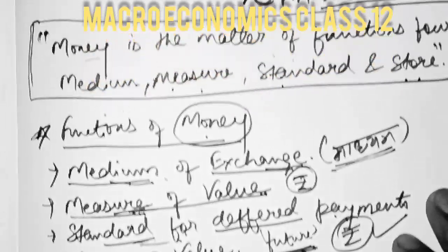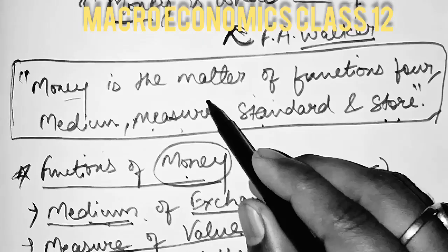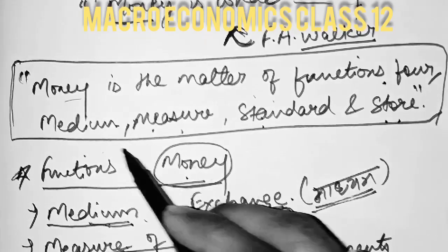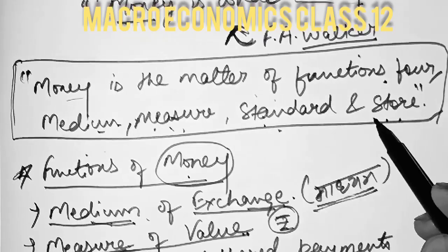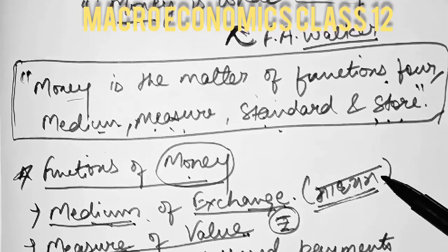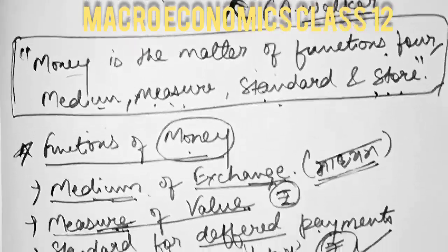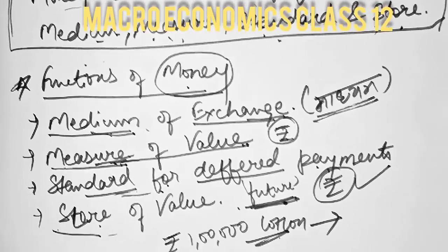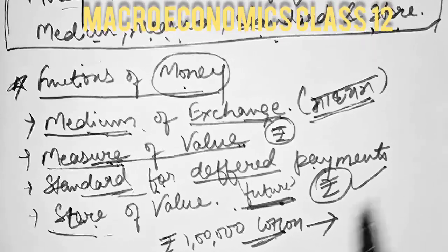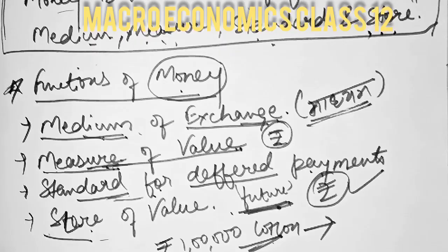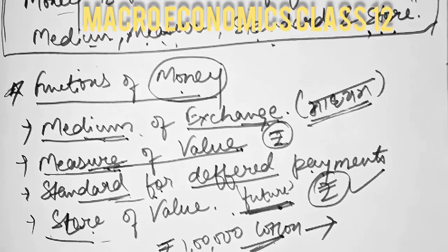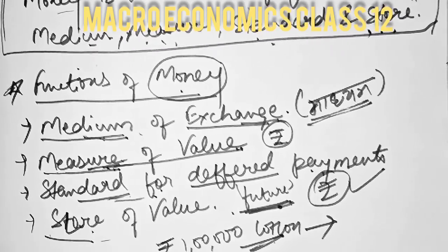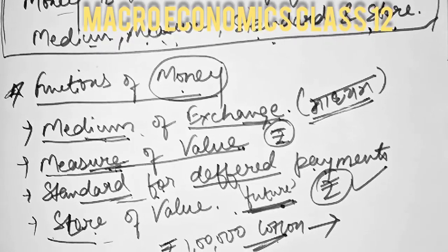This is the definition of money: money is a matter of functions for medium, measure, standard, and store — these are the 4 functions. I think the definition of money is now clear. In the next video, we will see the evolution of money, what is the supply of money, and explore the functions more deeply. Thank you.